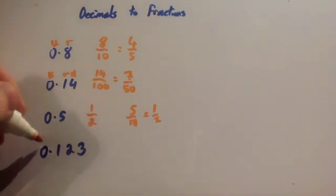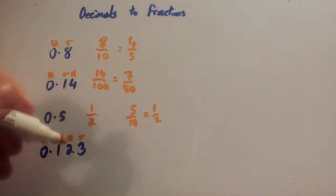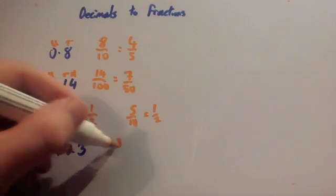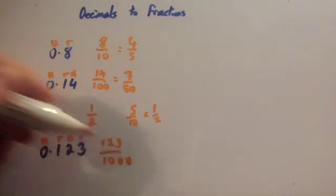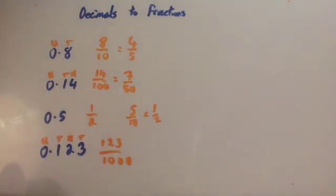OK, the next one. You've got units, tenths, hundredths, thousandths. You've got 123 thousandths, so 123 over 1000. And if it's possible to cancel it down. I don't think this one is, so that's my answer.